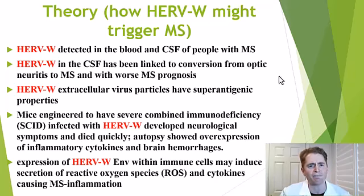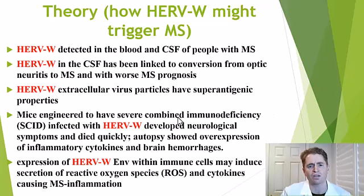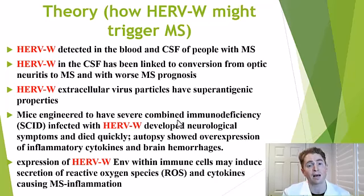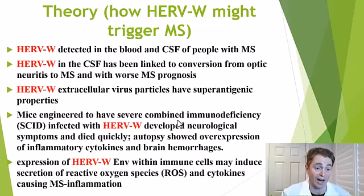There's an interesting study on mice engineered to have severe combined immunodeficiency — a genetic disease where humans and mice don't have any lymphocytes, no B or T cells. They infected these mice with HERV-W and they developed neurological symptoms and died quickly. Autopsy showed overexpression of inflammatory cytokines — proteins involved in immune cell signaling — and they had brain hemorrhages. So when immunodeficient mice get this virus, it causes injury to the brain, at least in mice.